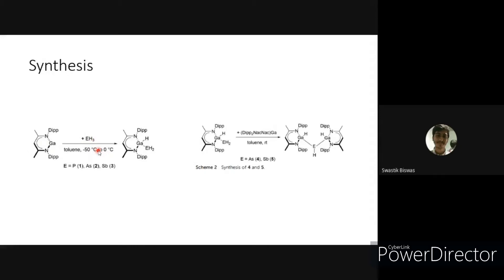Stibane was freshly prepared by reducing SbCl3 using LiAlH4 in low volatile solvent. These moisture-sensitive compounds were crystallized as colorless solid at minus 32 degrees Celsius in n-heptane.